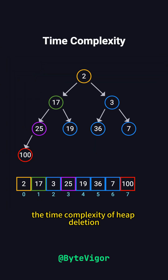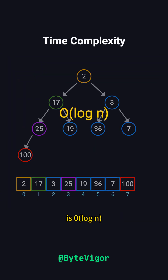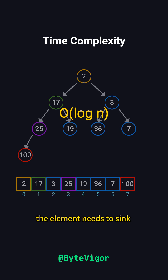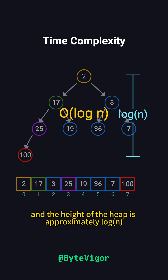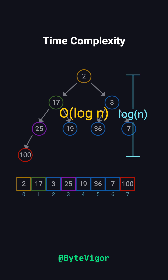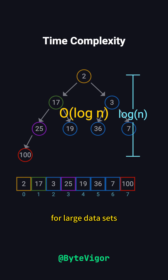The time complexity of heap deletion is O(log N), because in the worst case, the element needs to sink from the top to a leaf node, and the height of the heap is approximately log N. This makes heap deletion efficient for large datasets.